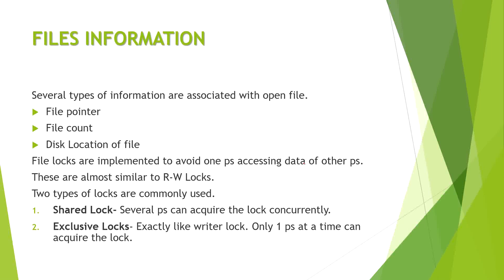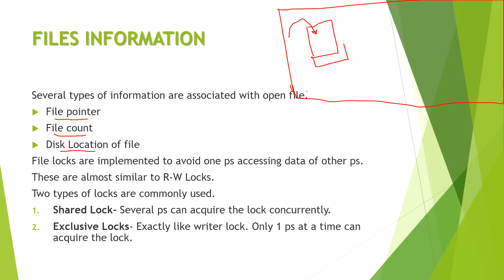There are three types of file information. First is the file pointer, which is used for reading and writing. Second is the file count, which tracks how many times the file is open. Third is the disk location of the file — where it is actually situated on the disk. Every file must keep track of these three pieces of information privately.